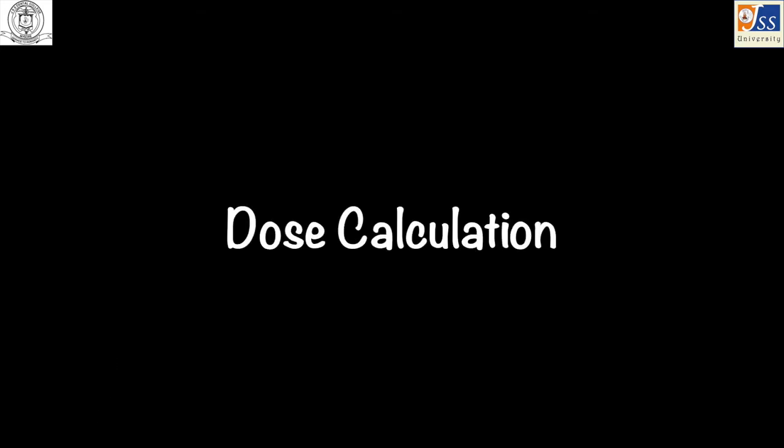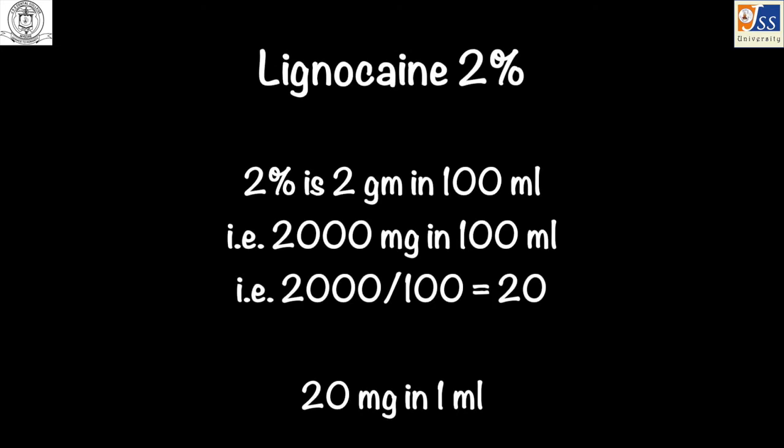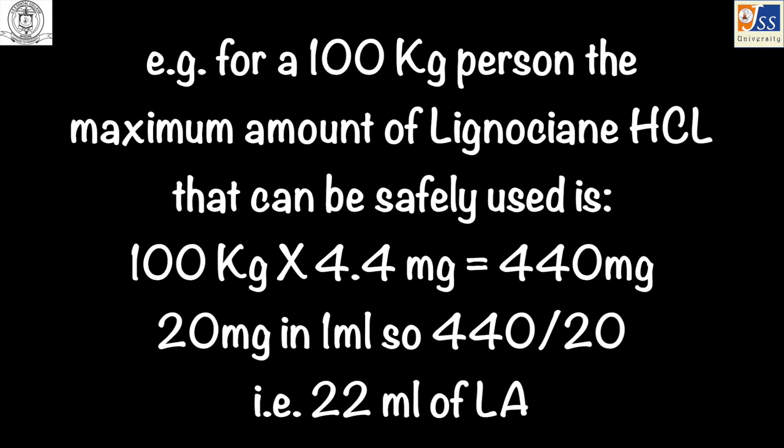For dose calculations, 2% lignocaine means 2 g in 100 ml, that is 2,000 mg in 100 ml, so each ml contains 20 mg of lignocaine. For example, for a 100 kg person the dosage is calculated as shown here.